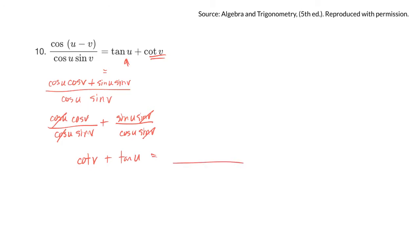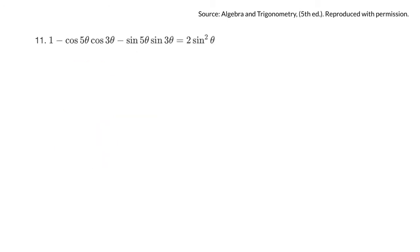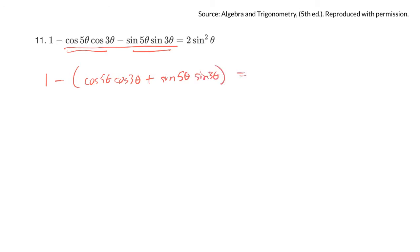Sorry, I finished that one for you — I should have stopped. Here's another one: 1 minus cos 5θ · cos 3θ minus sin 5θ · sin 3θ. There's a minus in front that bothers me. I'm going to factor a minus out of those, so it would be 1 minus (cos 5θ · cos 3θ minus sin 5θ · sin 3θ). But wait — that's actually cos(5θ minus 3θ) from the cosine difference identity. And 5θ minus 3θ is 2θ.